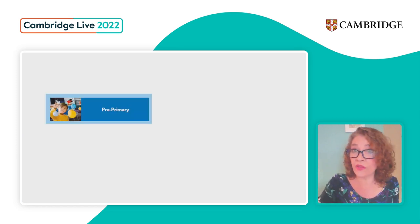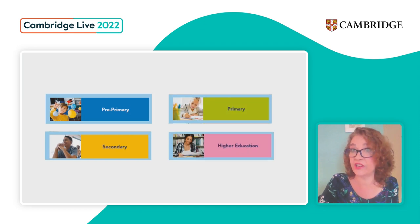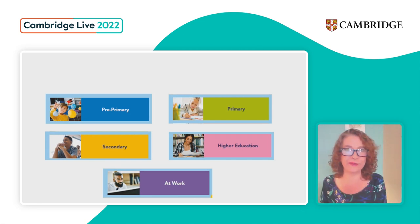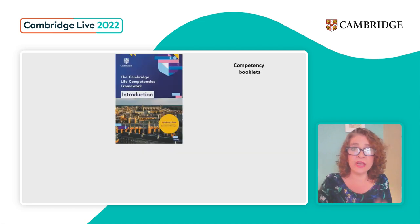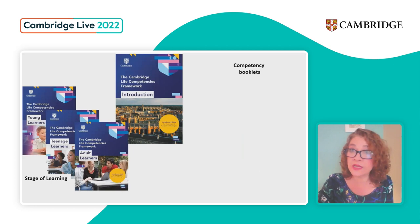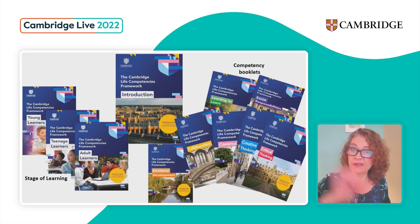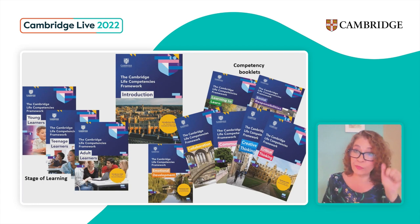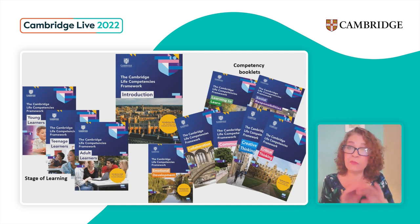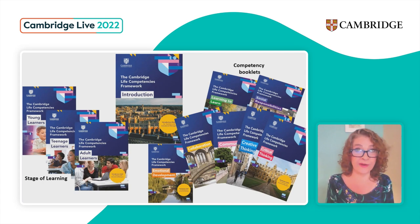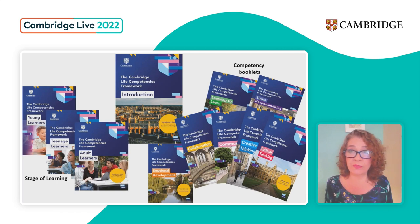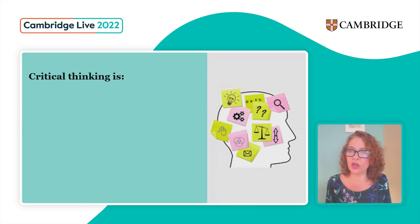One other thing to note — it's the entire learning journey: from pre-primary and kindergarten through primary, secondary, higher education, adult, and also at work. We can use these to help you in your professional development as well. We've got the introductory booklet and each of the competency booklets. If you're only teaching young learners, that's the booklet you want — it's got all the competencies for pre-primary and primary all in one place. The same for teenage learners and adult learners. That's also how the activity cards are organized.